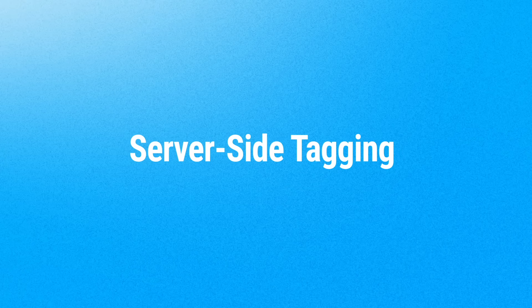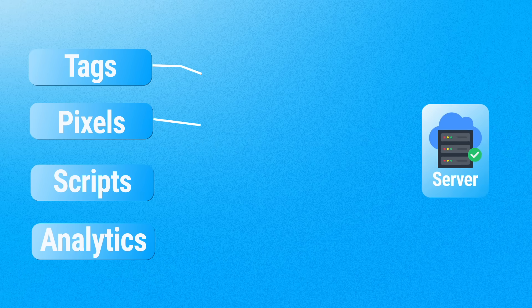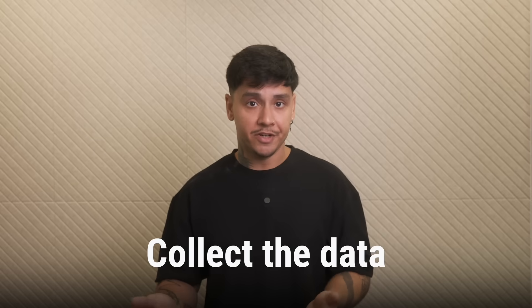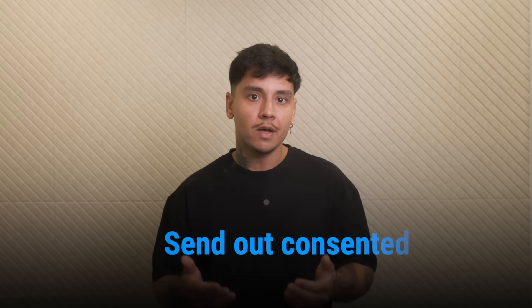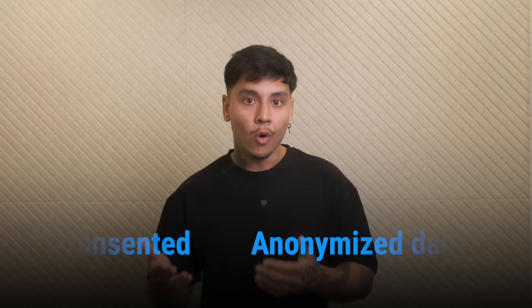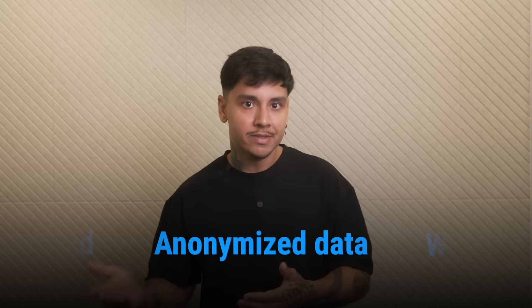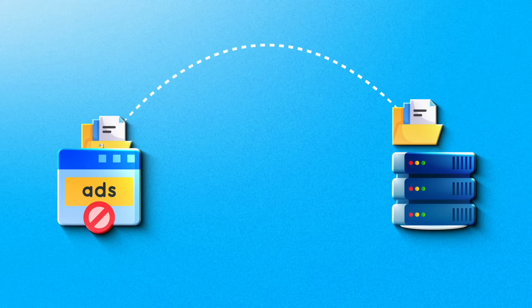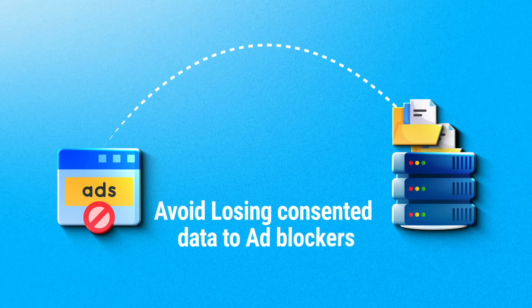Server-side tagging flips this. Tagging executes on your server, not in the browser. You collect the data first, filter it, and only send out consented or anonymized data — what is useful. More control for you, more privacy for your users, and way better resilience against ad blockers.